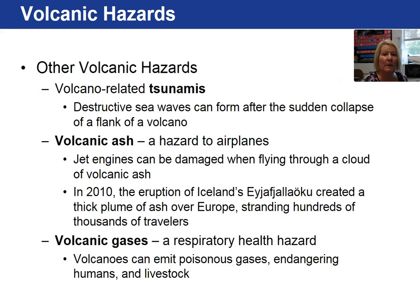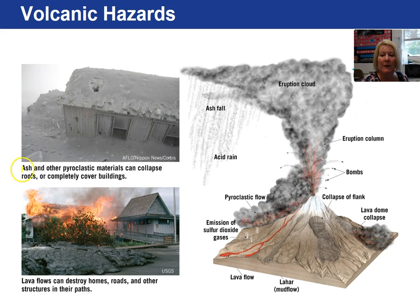Another volcanic hazard we've been made aware of over the last decade are tsunamis. Volcanic ash is a hazard not only to people's lungs because it contains silica, but also to jet engines in airplanes. Volcanic gases can be quite noxious and produce a health hazard. Ash and other pyroclastic materials can collapse roofs or completely cover buildings, and lava flows can destroy and burn homes to the ground.